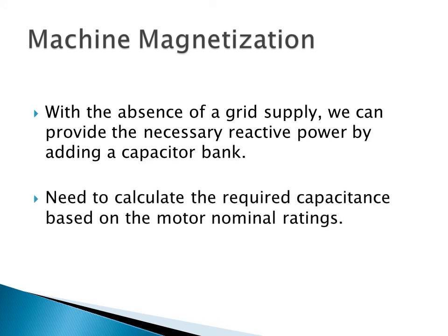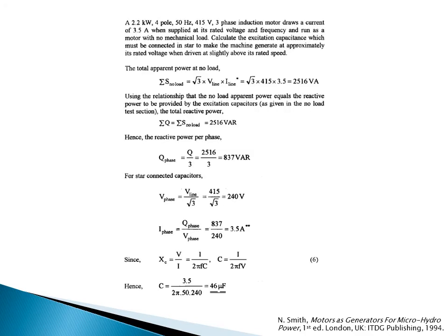We will, however, need to calculate the required capacitance based on the motor's ratings and the anticipated load. In the example here, we can see that we're presented with a 4-pole, 2.2 kW, 50 Hz, 415 V, 3-phase motor, which draws a current of 3.5 A at its rated parameters. Without going through the calculations, you can see how we calculate the required reactance, and therefore the required capacitance for this particular motor setup to be used as a generator.